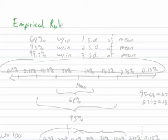The basic idea is that we know 68% of the data lie within one standard deviation of the mean. We know that 95% lie within two standard deviations of the mean, and that 99.7% of the data will lie within three standard deviations of the mean.